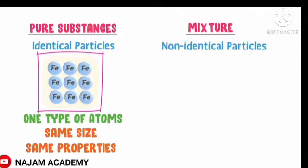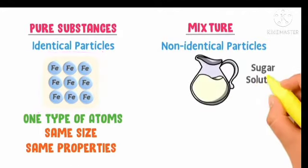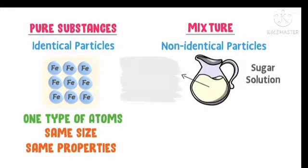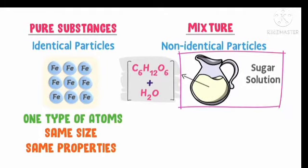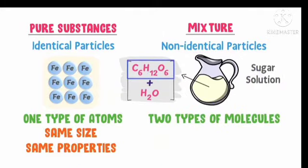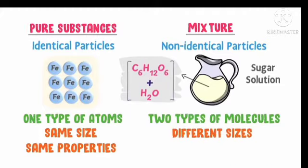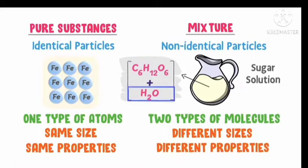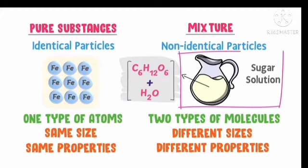Mixtures means non-identical particles. These substances have a mixture of two or more elements. Here sugar and water — C6H12O6, that is glucose, and H2O, water — these two types of molecules in combination. Two or more molecules combination is called a mixture. Mixtures have different sizes and different properties, whereas pure substances have same size and same properties. These are the two types of matter: pure substances and mixed substances.